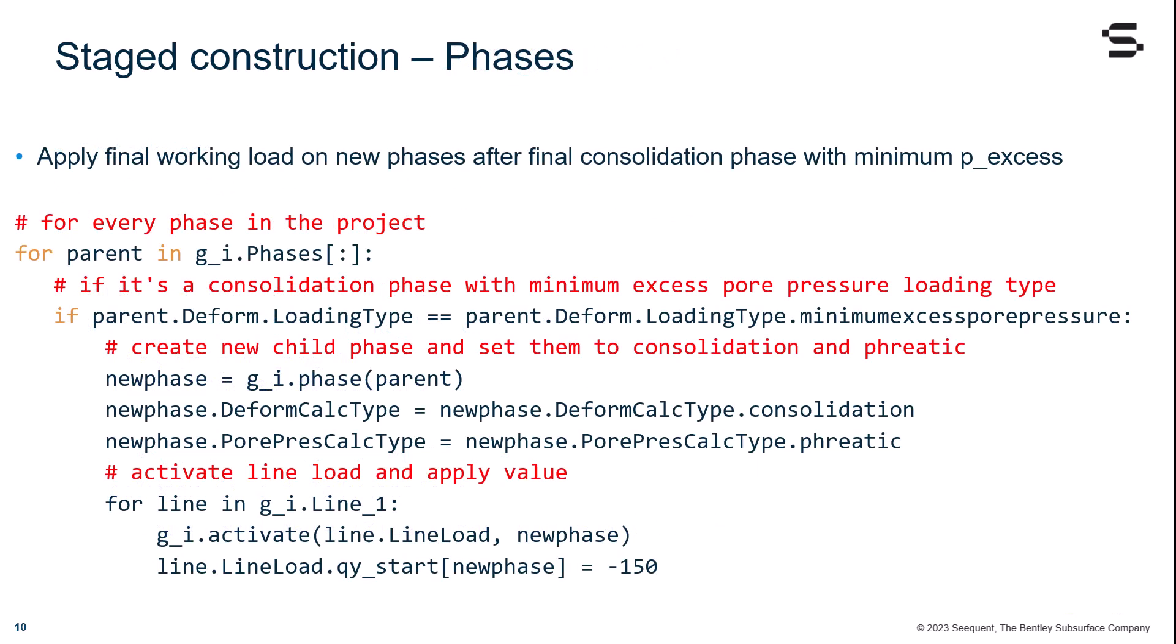In this example, I will demonstrate how you can apply a final working load on new phases created after each consolidation phase present in my model, which are set to minimum excess pore water pressures. We start with a simple for loop all over our phases. We check if our phase is a consolidation set to minimum excess pore water pressure or not. If that condition is met, then we can create a new phase, set it to consolidation and phreatic pore pressure calculation type, and finally loop over the cat objects of line 1 to activate the line load and set the vertical component to minus 150.